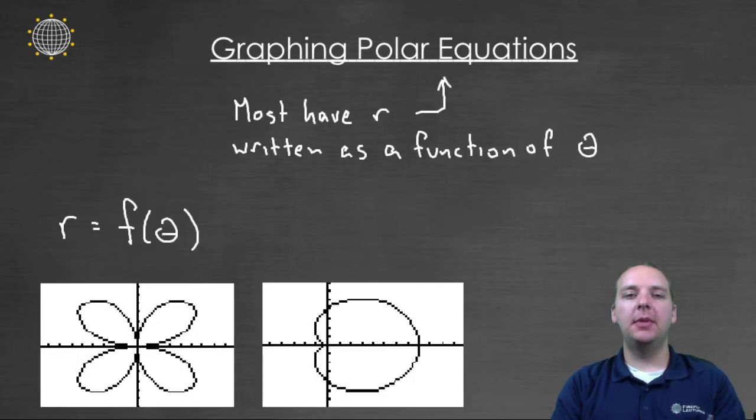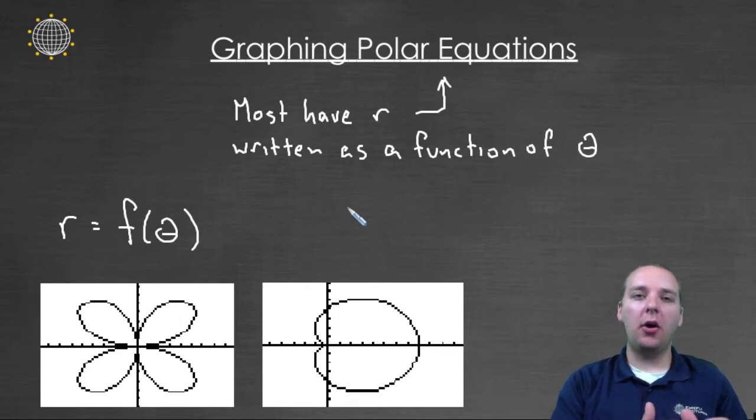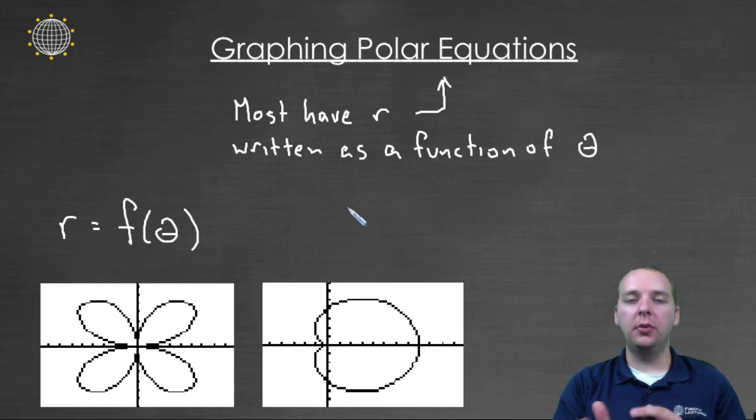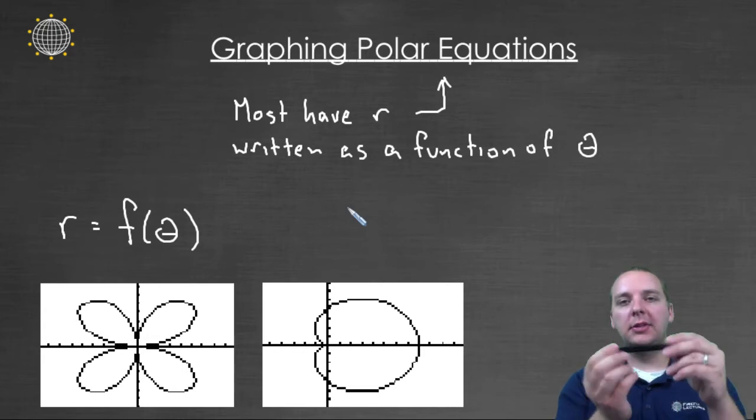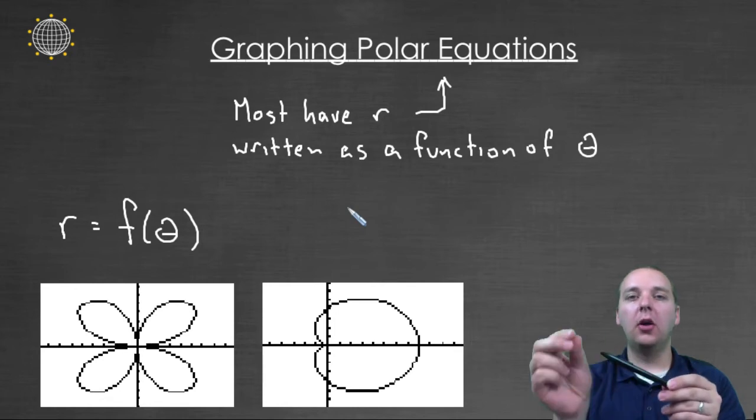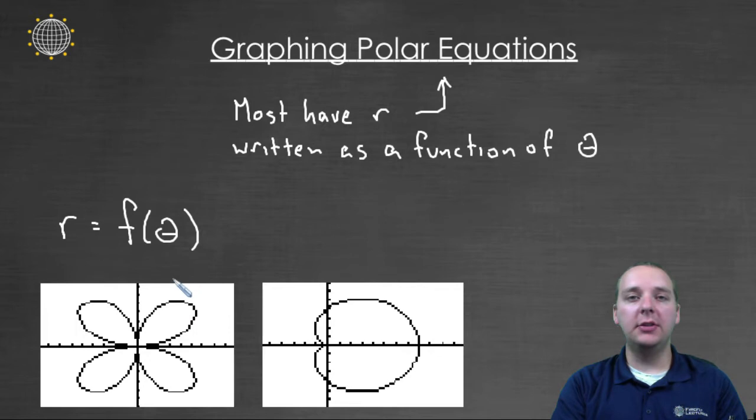Now what you'll find most of the time is that you'll have the R written as a function of theta. So in other words, the R, which is the radius or the reach that you're stretching out from the origin, will depend on your angle, will depend on your theta. So as theta varies, you'll get R values that are longer or shorter. And so it makes some very interesting graphs here.